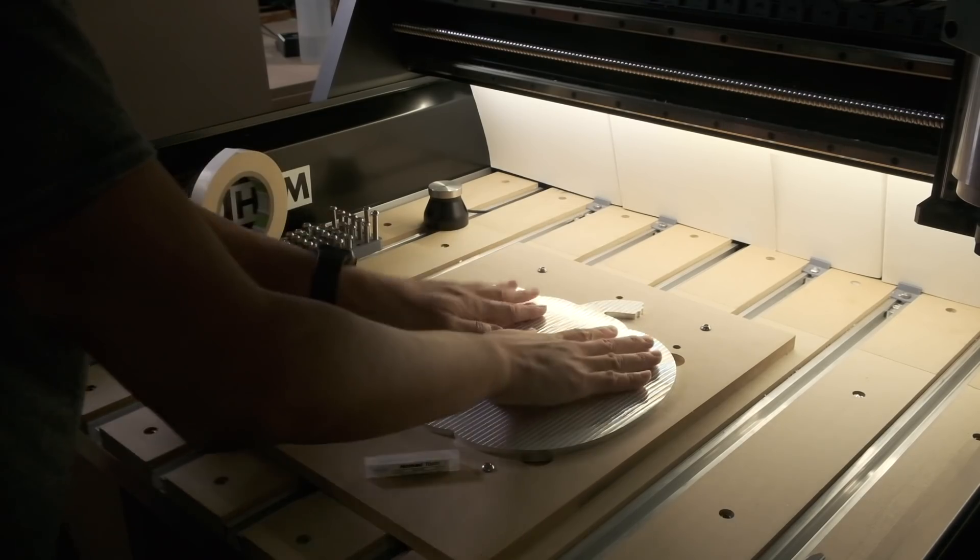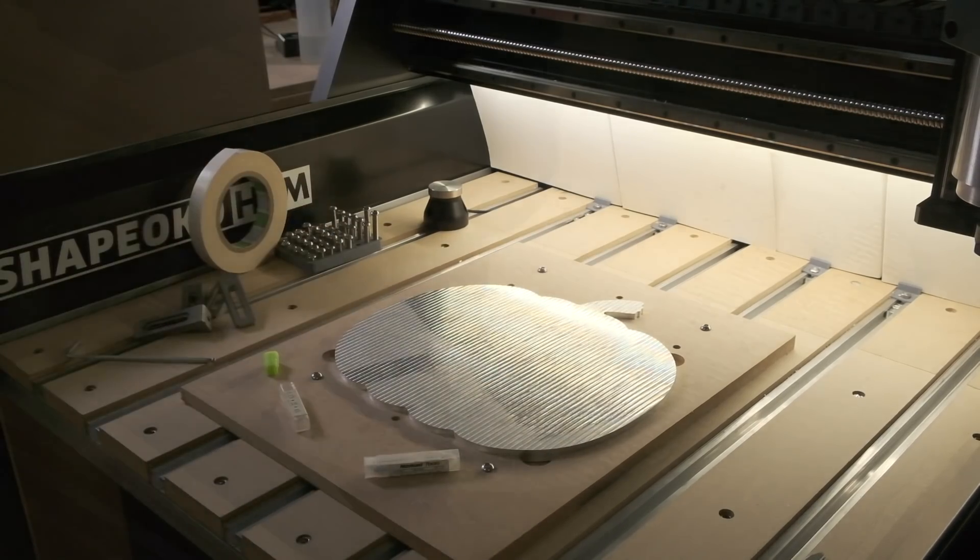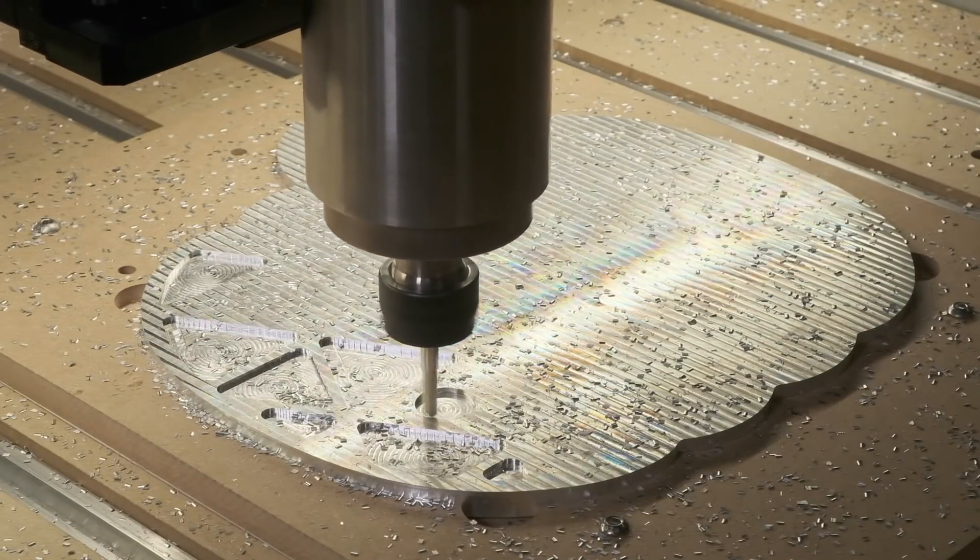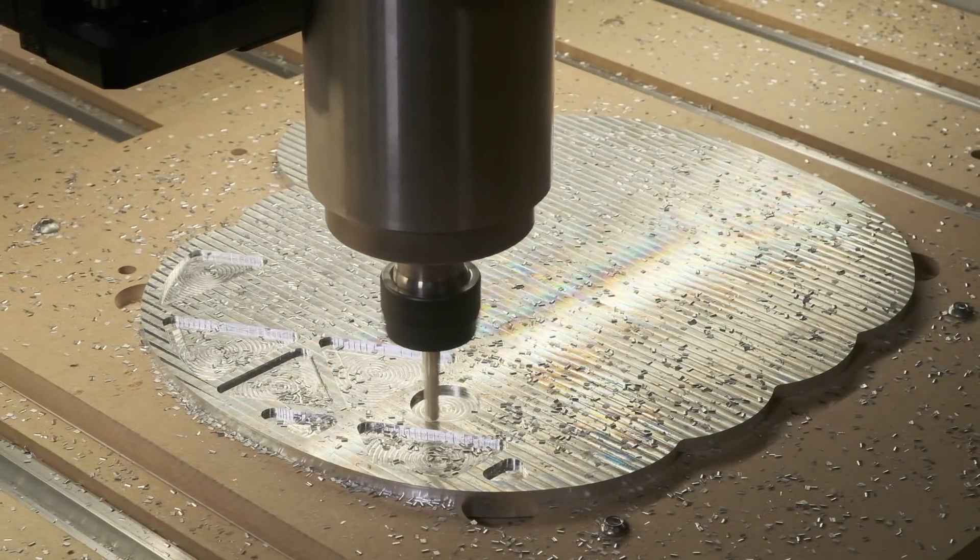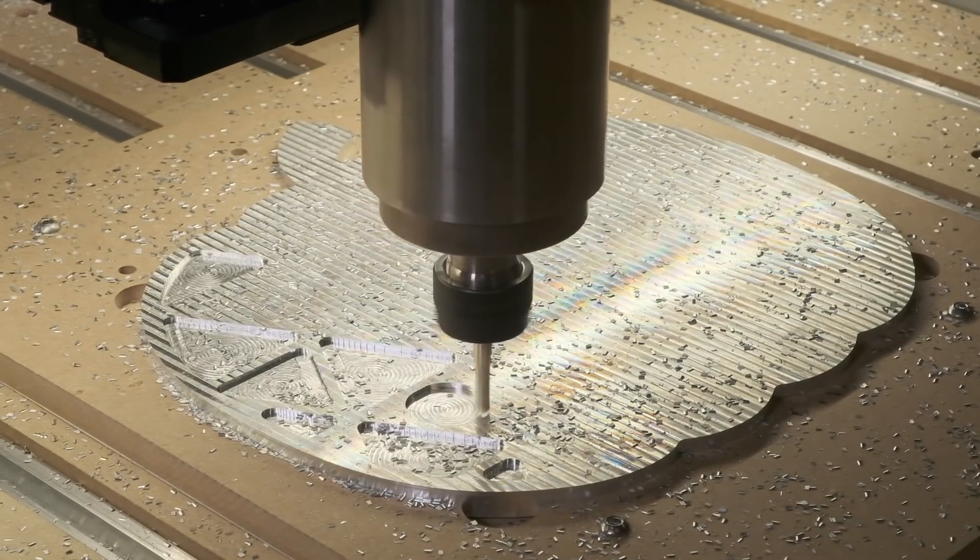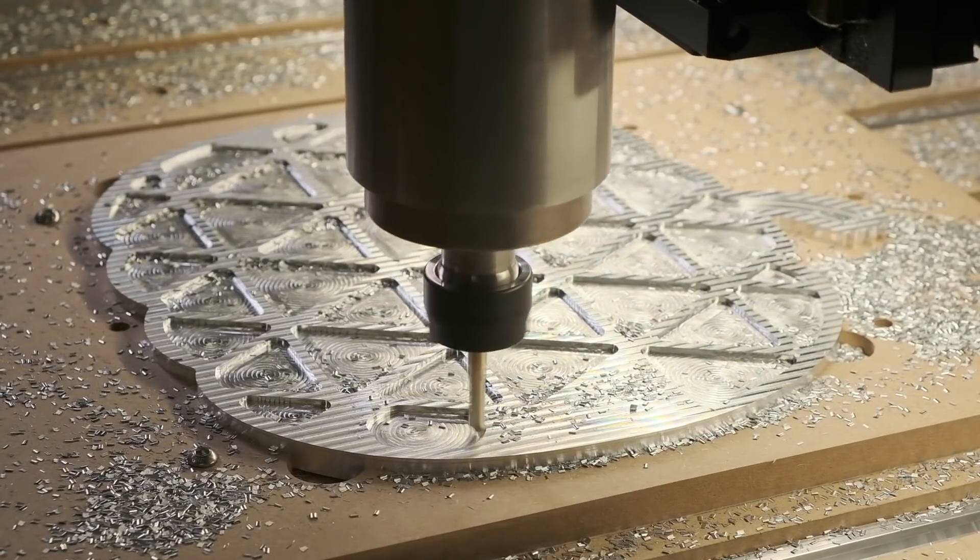For all of my fears of ripping my pumpkin out of my MDF fixture though, I probably need not have worried. The pocket that I machined to receive the pumpkin, programmed to be 0.05mm oversized on all sides, was actually a perfect friction fit.